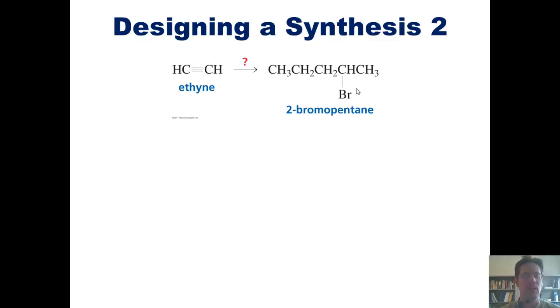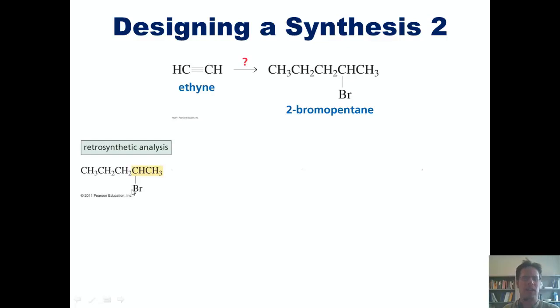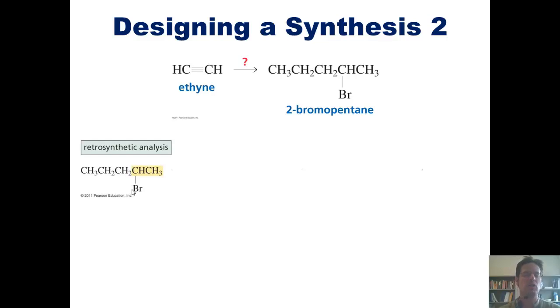I'm going to analyze this retrosynthetically by writing down the product first. Is there any reaction that I know of that can give me an alkane that has a bromine attached to it? Well, I could imagine that if I started with an alkene, we've learned in our previous chapter, that treating that with HBr can put a hydrogen and a bromine on the alkene, giving me indeed an alkyl bromide like this. Thus, if I began with this alkene, treated with HBr, the hydrogen would go on the less substituted external carbon, and the bromine would go on the internal carbon in the carbon-carbon double bond system, giving me this product.